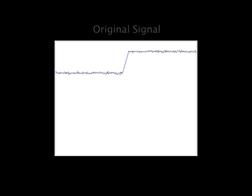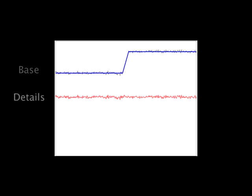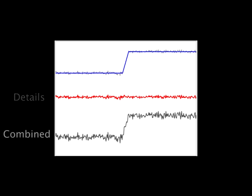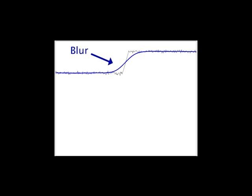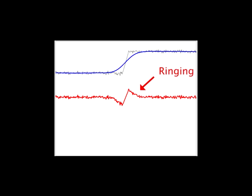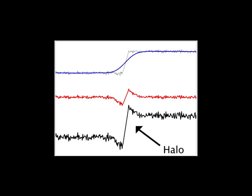By smoothing a signal, one can extract the details at a given scale, which can then be manipulated and recombined with the base to yield the result. When performing the smoothing, it is important to avoid blurring of strong edges, since this introduces ringing into the detail layer and may result in halos once the base and the detail are recombined.